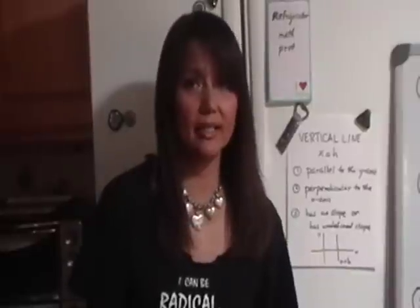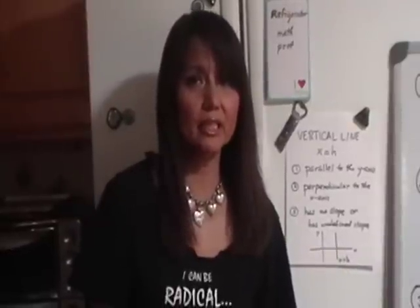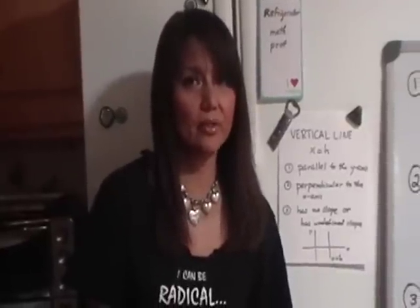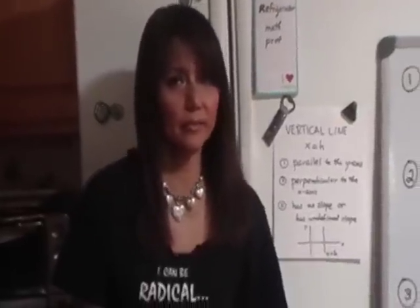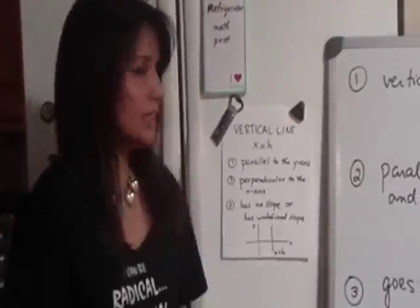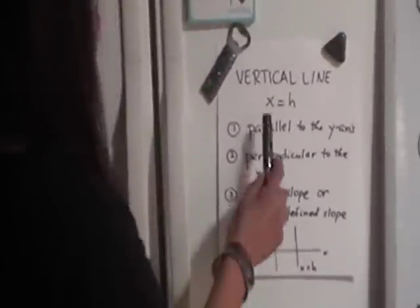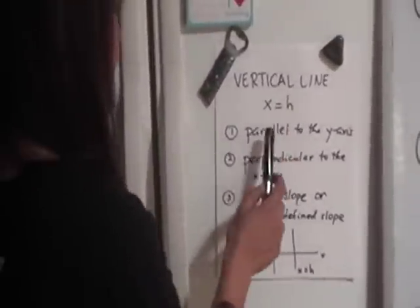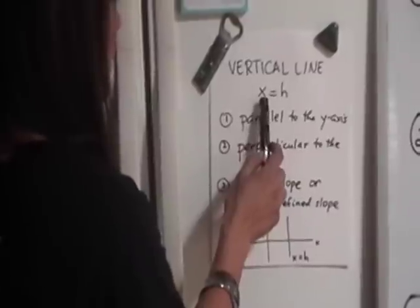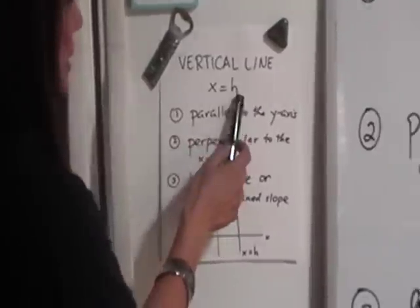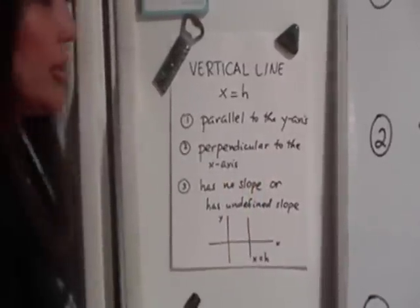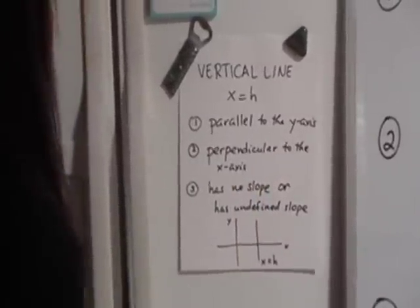Now let's talk about how to write equations of special lines, namely vertical lines and horizontal lines. First, let's do a vertical line. A vertical line has an equation of the form x equals h, where h is a constant.